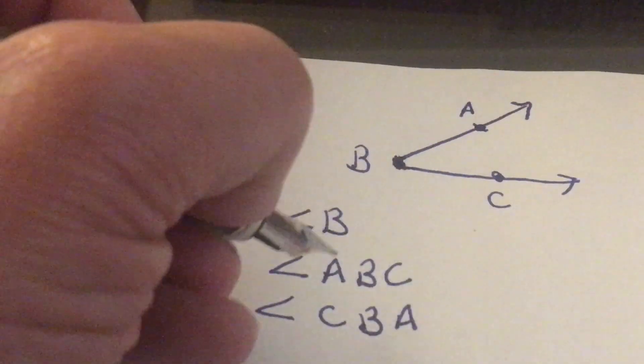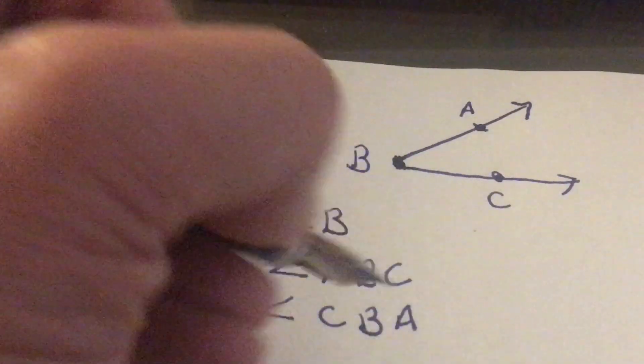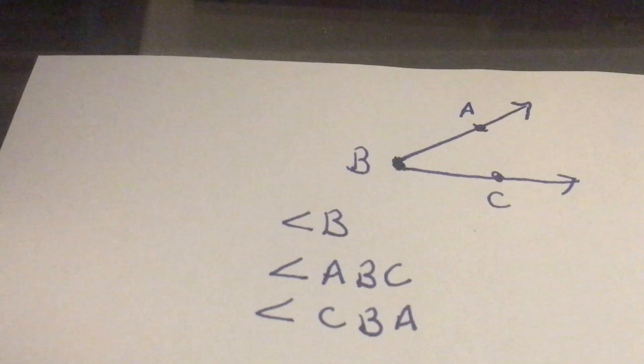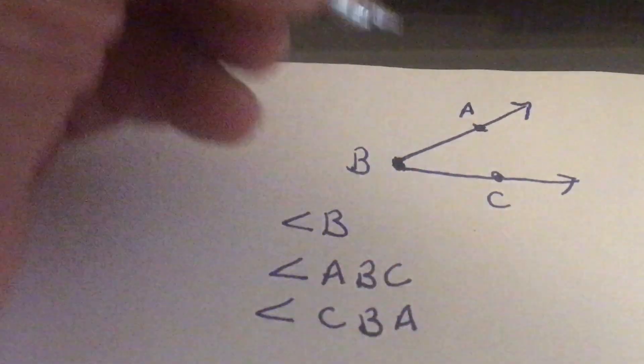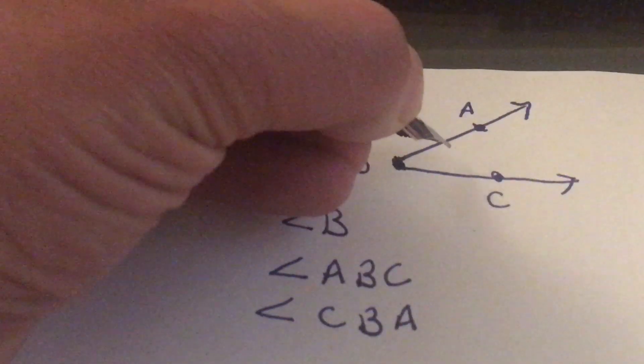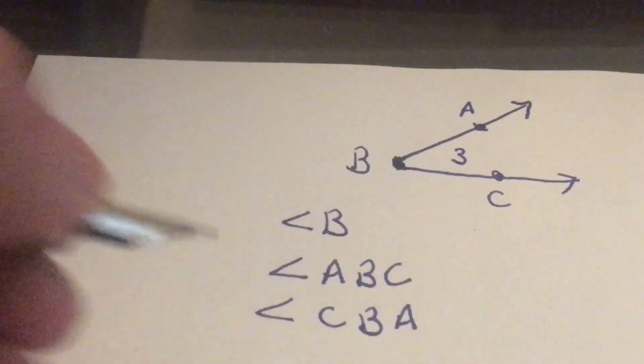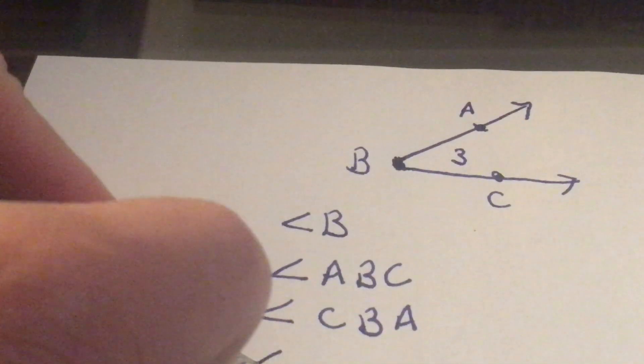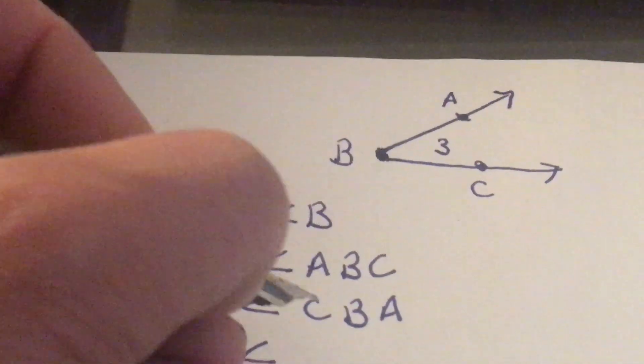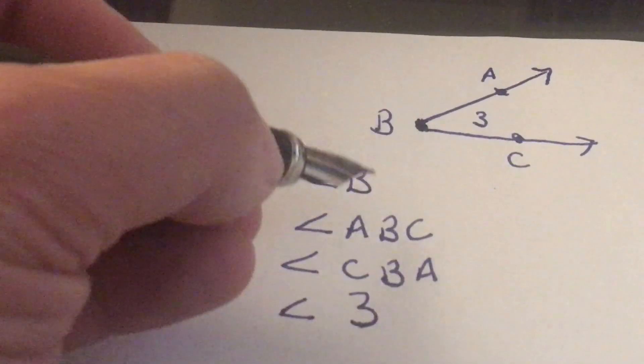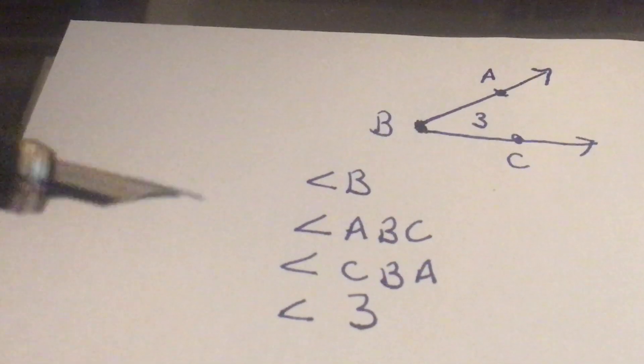Because sometimes you're going to need to put the sides so you know which angle it is, because some angles will share a common vertex. Then sometimes they'll put a number in here, and that is also an angle name I can give it, which would be angle 3. So that gives me four different possible names for the same angle.